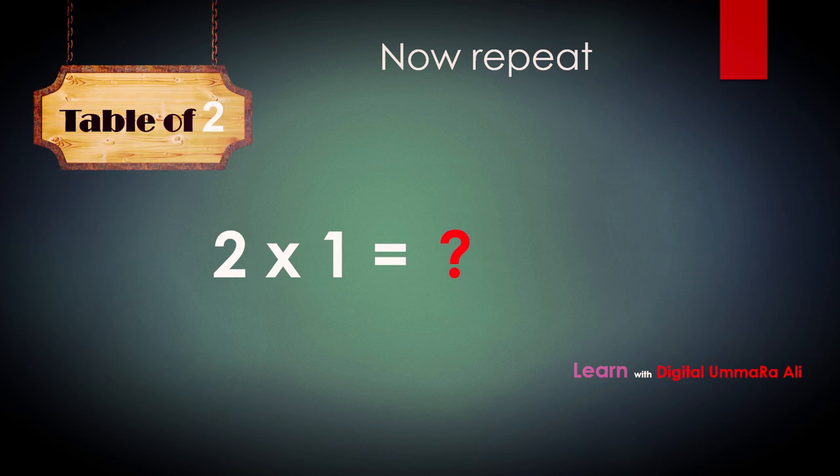Now let's repeat the table of two. Two ones are — yes — two ones are two.